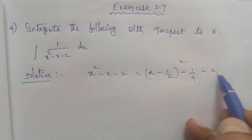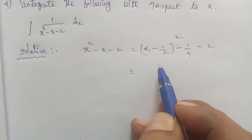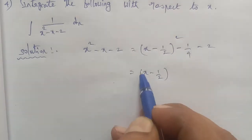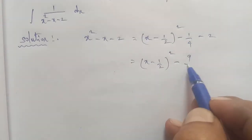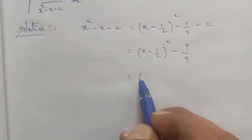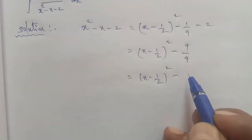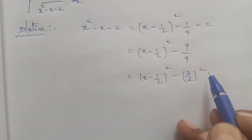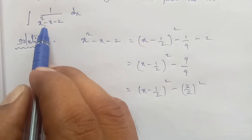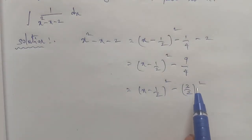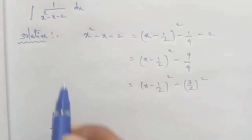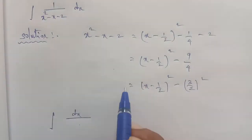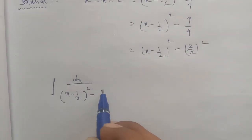So x minus 1 by 2 the whole power of square, minus 8 minus 1 is minus 9 by 4. This equals (x minus 1/2) whole square minus (3/2) whole square. So in the given question, x square minus x minus 2 equals (x minus 1/2) whole square minus (3/2) whole square.